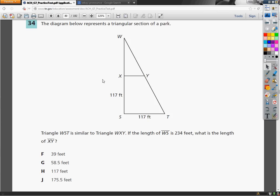The diagram below represents a triangular section of a park. Triangle WST, which I'm going to go ahead and mark out with this highlighter. WST is the big one. The big one is similar to the triangle WXY, which is the little bit smaller one here.